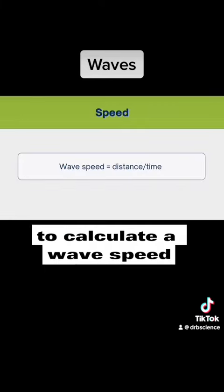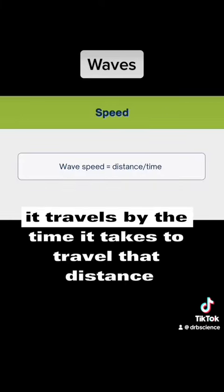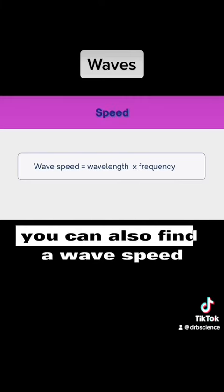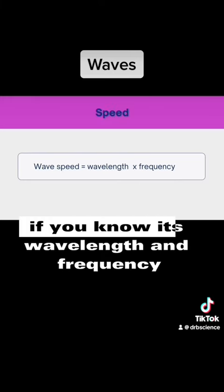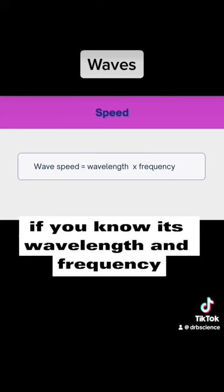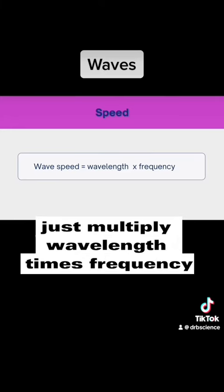To calculate a wave speed, divide the distance it travels by the time it takes to travel that distance. You can also find a wave speed if you know its wavelength and frequency. Just multiply wavelength times frequency.